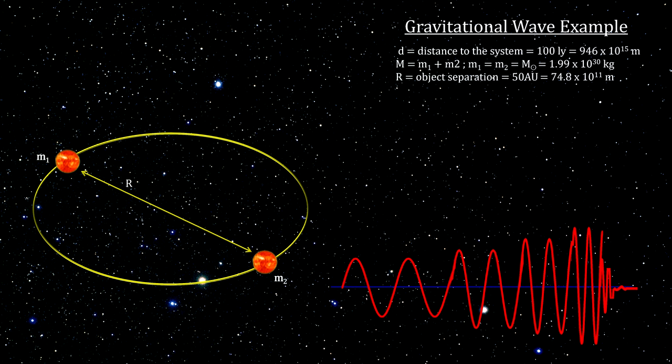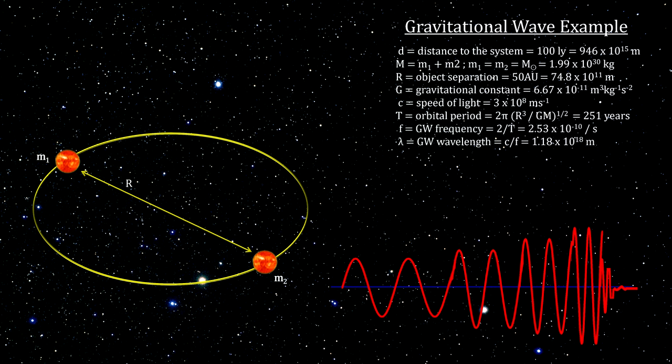That's 50 astronomical units. From the masses and the distance between them, we can calculate the star's orbital period. And with that, we can calculate the orbital frequency, which gives us the frequency and wavelength of the resulting gravitational wave. And with the masses and frequency, we can calculate the amplitude of the resulting gravitational wave.